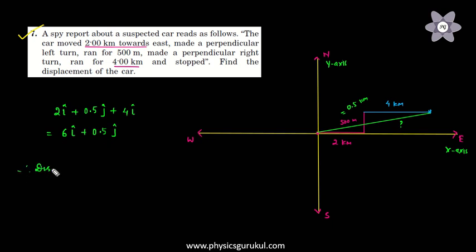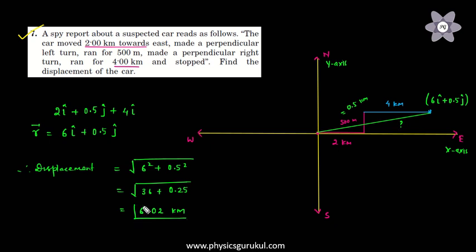So what is this magnitude? Therefore displacement equals—this position vector is 6 i-cap plus 0.5 j-cap. So displacement is under root 6 squared plus 0.5 squared. That equals 36 plus 0.25, which is 6.02 kilometers.